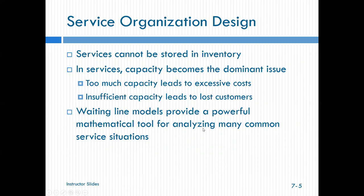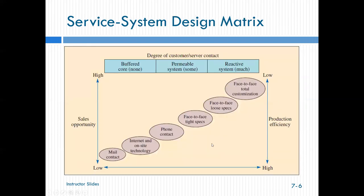Things about services, we had this earlier in the semester, but just a little bit of a refresher. Services cannot be stored, they're intangible. In services capacity becomes the dominant issue because we can't store the service. Too much capacity leads to excess cost, too little leads to lost customers. So what we're trying to do when we manage services is find that sweet spot, how do we provide enough service that we don't lose customers. And we can not just lose customers but have satisfied customers. And so waiting line models help us do that.